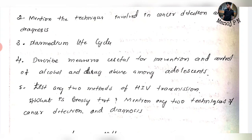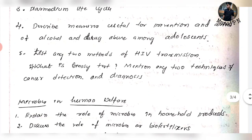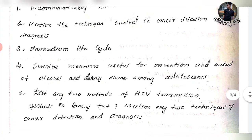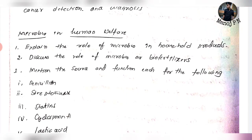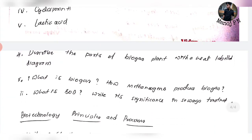Describe measures useful for prevention and control of alcohol and drug abuse among adolescents — this is a direct NEET question. List any two methods of HIV transmission — you can also describe these two methods. Biopsy test and mention any two techniques of cancer detection — these are combination questions. Microbes in human welfare: role of microbes in household products, role of microbes in biofertilizers, and mention source and functions for the following — like Penicillium and others. Describe the parts of biogas plant with a neat labelled diagram.